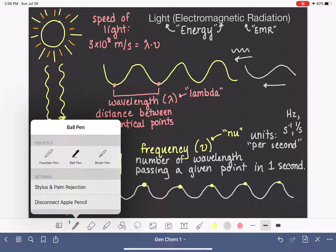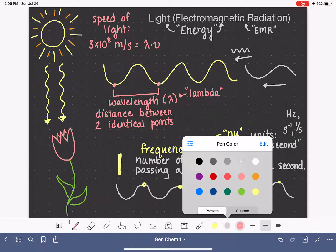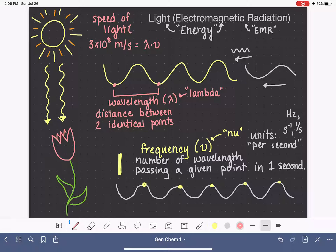So the symbol for the speed of light is a lowercase c. So you might see the equation c equals lambda nu written instead of this form right here. c is just this constant, three times ten to the eighth meters per second.